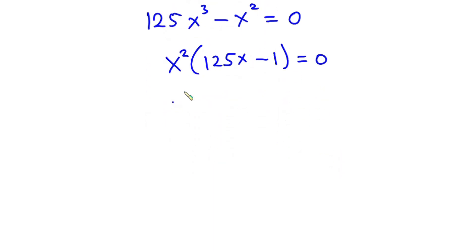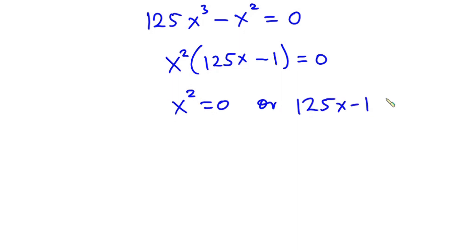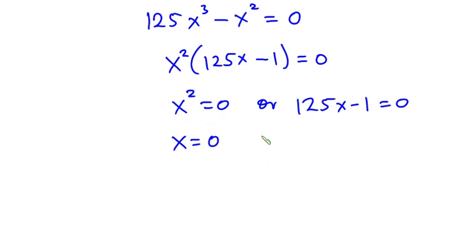From here we can say that x squared equals 0, or 125x minus 1 equals 0. Considering the first equation, we can say that x is equal to 0.